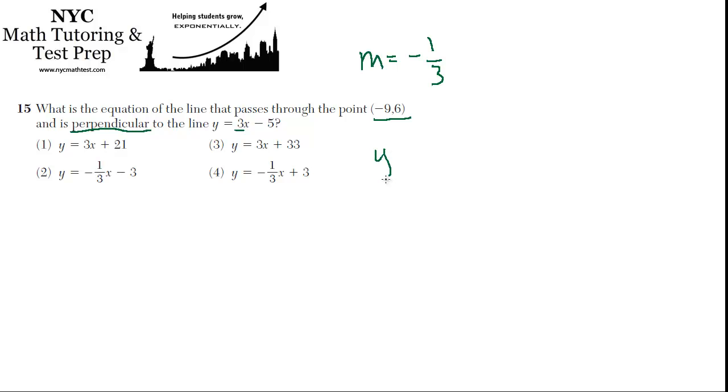So, we're plugging into y equals mx plus b. And we're making a substitution of 6 for y, negative 9 for x, and the new slope that we just determined. The only thing we don't know is b. We'll find that out.